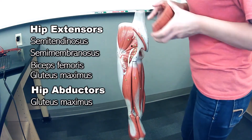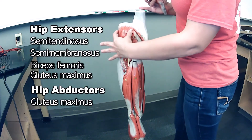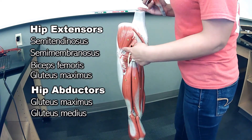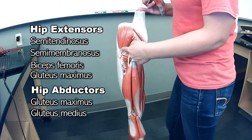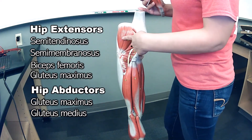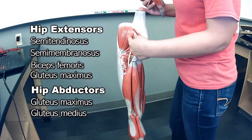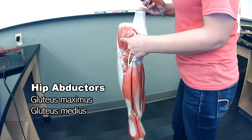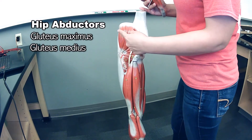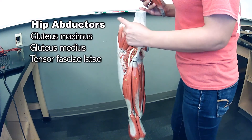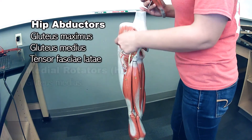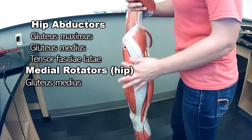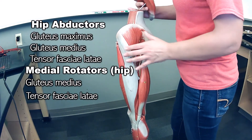If you take that off, underneath is the gluteus medius. The gluteus minimus is not visible on this model, but it will be underneath the gluteus medius. The gluteus medius abducts and medially rotates. Tensor fasciae lati also medially rotates.